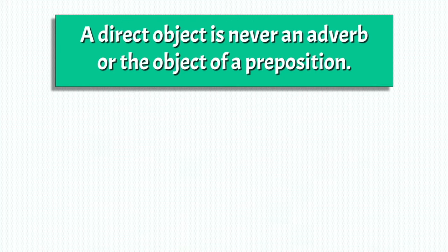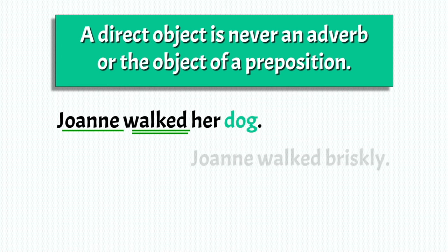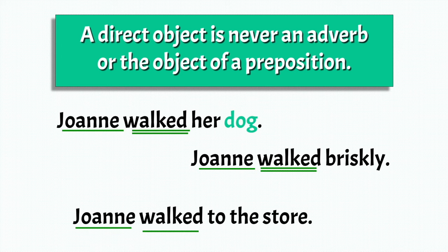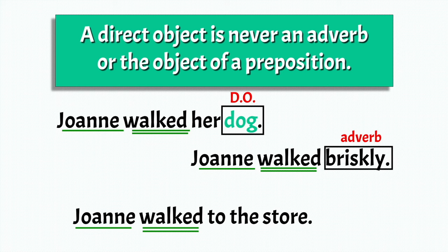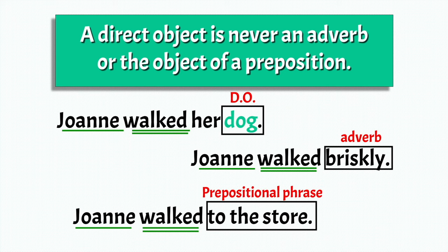A direct object is never an adverb or the object of a preposition. Just like these examples. Joanne walked what? Her dog — that's your direct object. But Joanne walked briskly — that is an adverb. So briskly is an adverb. And Joanne walked to the store — that is a prepositional phrase.